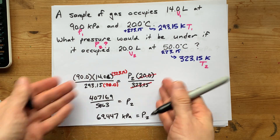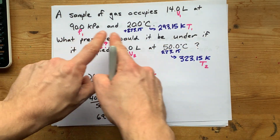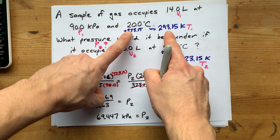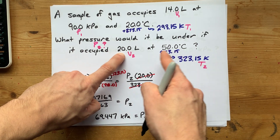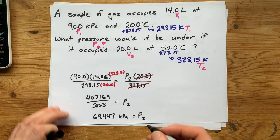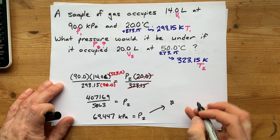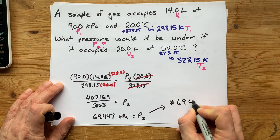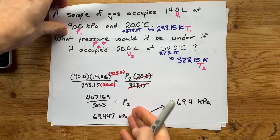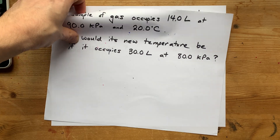I need to round this to the proper number of significant figures — three significant figures. One, two, three. My answer is 69.4 kilopascals. Solving for P2 isn't too bad, and I think you'll find solving for V2 is about the same.